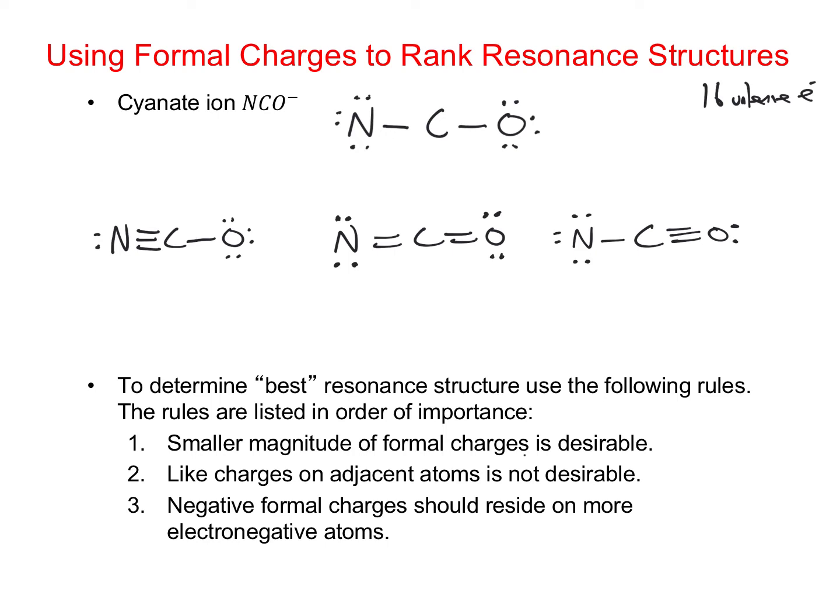We have 3 resonance structures, and they're non-equivalent. So we want to see if we can use formal charges to determine which one is the best. For each atom in each of the resonance structures, I want to assign a formal charge.